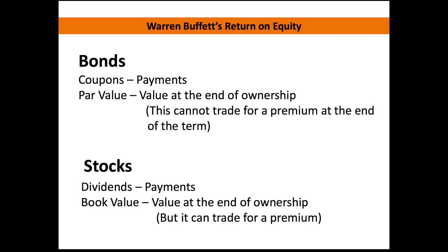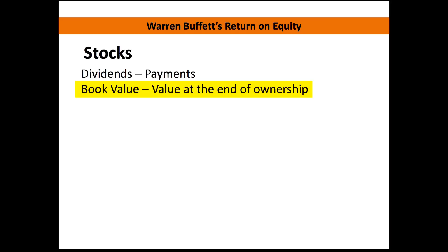When a bond matures there's a term limit and you get your par value back, but with stocks it's indefinite and you're basing that value off of how the book value is growing. That's why they're very similar. When you're figuring out intrinsic value using the intrinsic value calculator from Course 2, Unit 3, all it's doing is using a discount rate calculator — just like we use a discount calculator when valuing a bond. The return on equity calculation focuses on how that book value is changing.